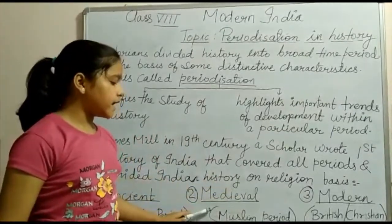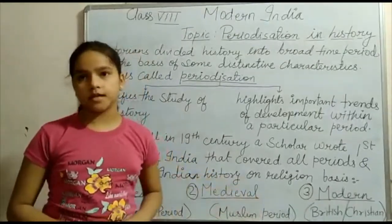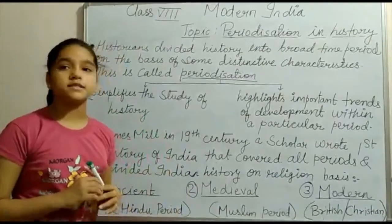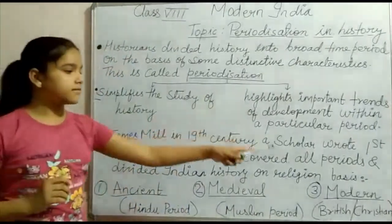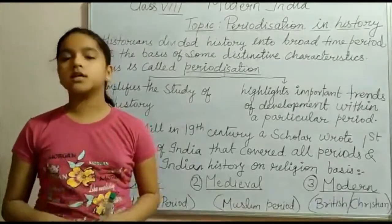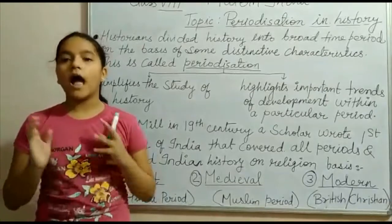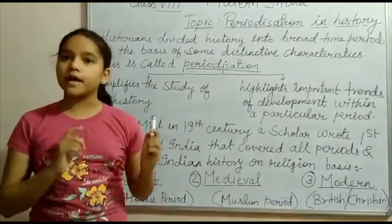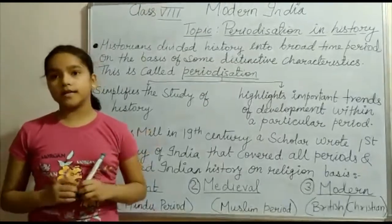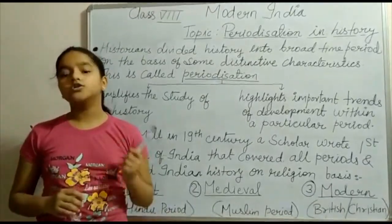The medieval period was known as the Muslim period, and the modern period as the British and Christian period. After independence, Indian historians discarded this religion-based division because the development of a multi-religious country like India is influenced by several factors and not merely by the religion of the ruler. So Indian historians decided to divide history on the basis of political, social, economical, and cultural factors.